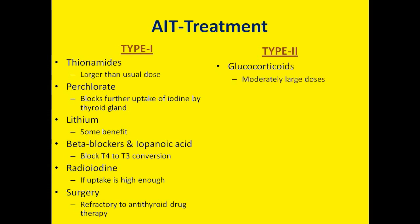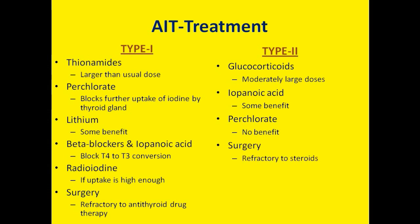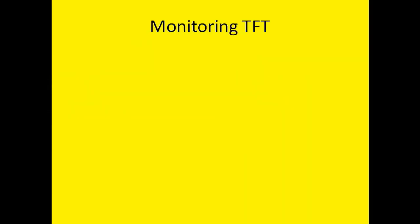For Type 2 AIT, glucocorticoids are the mainstay of treatment, used in moderately larger doses. Iopanoic acid has some benefit in Type 2 AIT; however, perchlorate, commonly used in Type 1, has no benefit in Type 2. Surgery is reserved for those refractory to steroids.